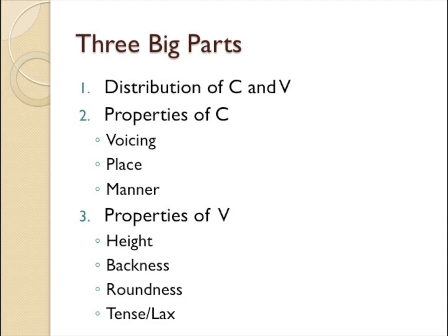There are three big parts in this checklist. Number one is the distribution of consonants and vowels, the second part is the properties of consonants, and the third part is the properties of the vowels. This checklist provides you all the features that you have to look into when you're trying to find the underlying form, and I'm going to explain each of them in the slides later.